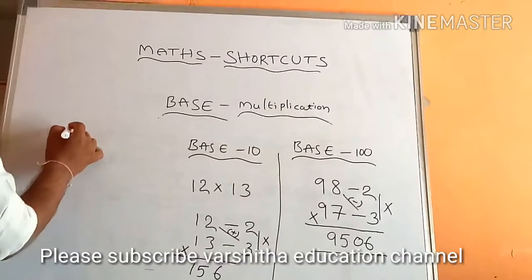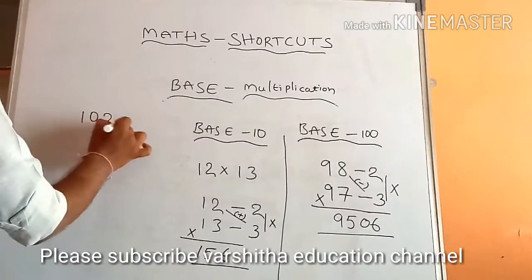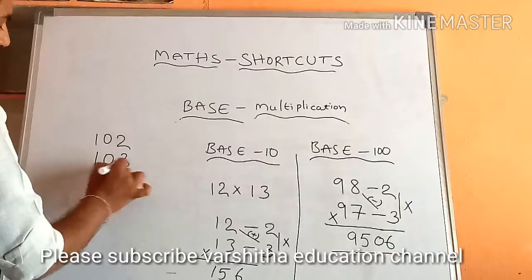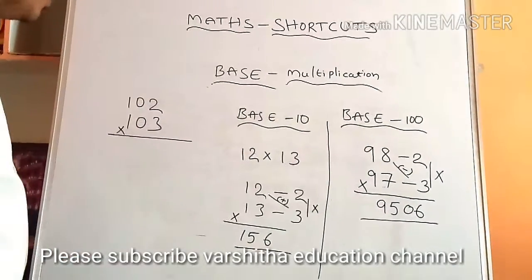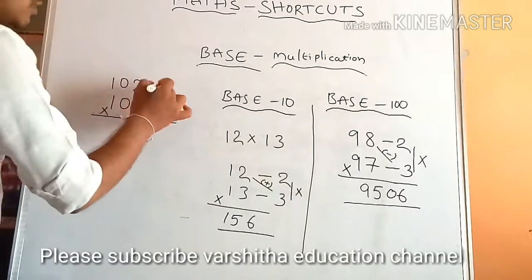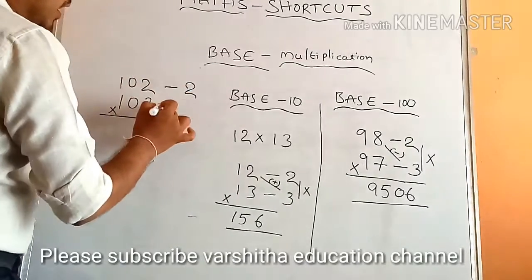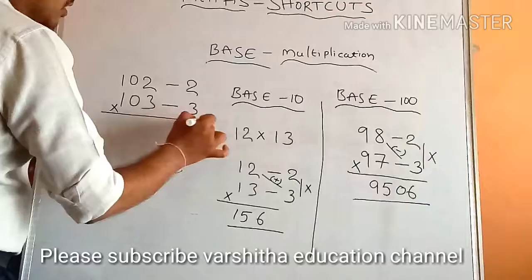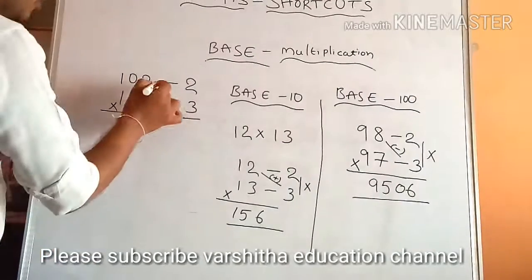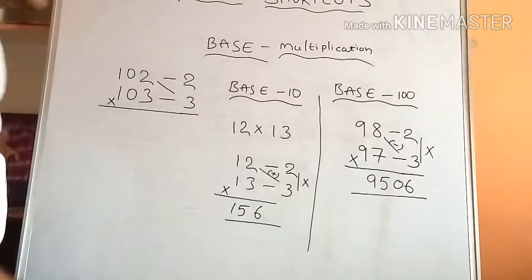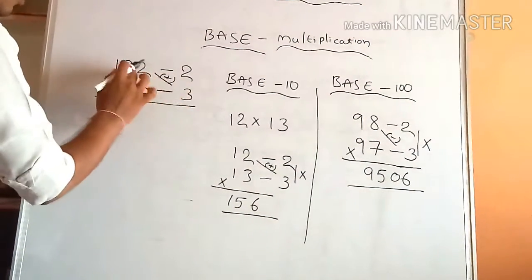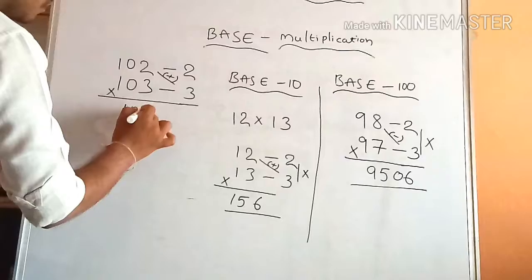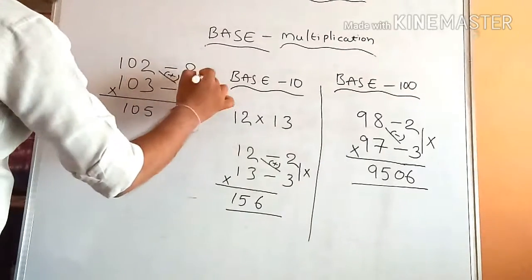want to take base above 100. For example, 102 is multiplied with 103 - multiplication above 100, so base above value. Then you can take - above is 2, and here above is 3. So then, automatically, what I said - above the base value, definitely you can take as plus. Then it should be 102 plus 3 means 105. Then 2 times 3